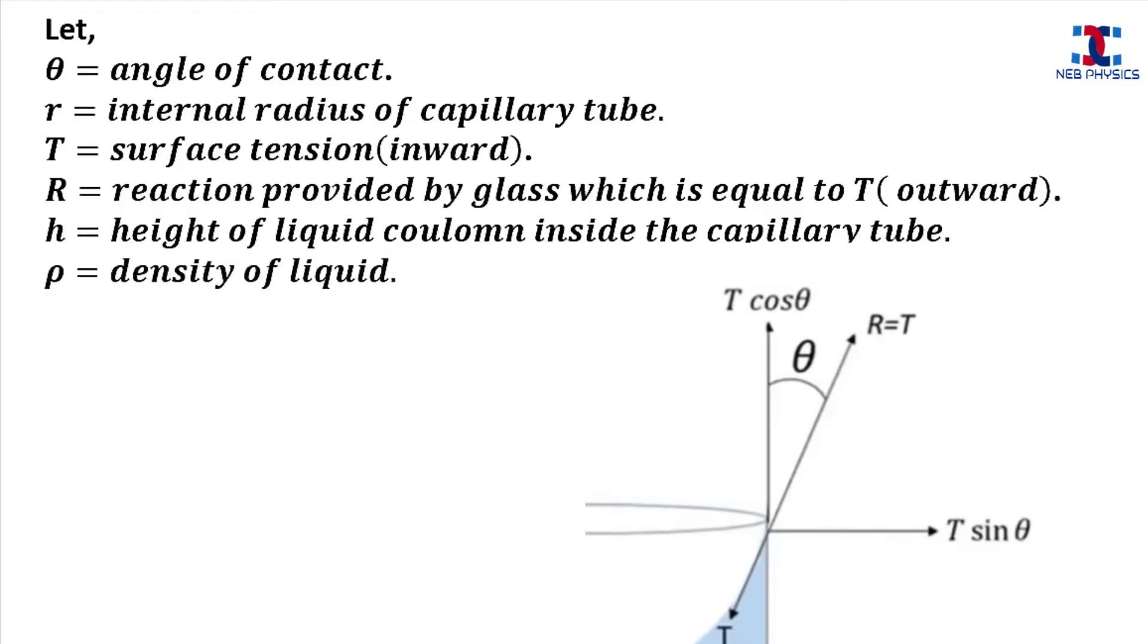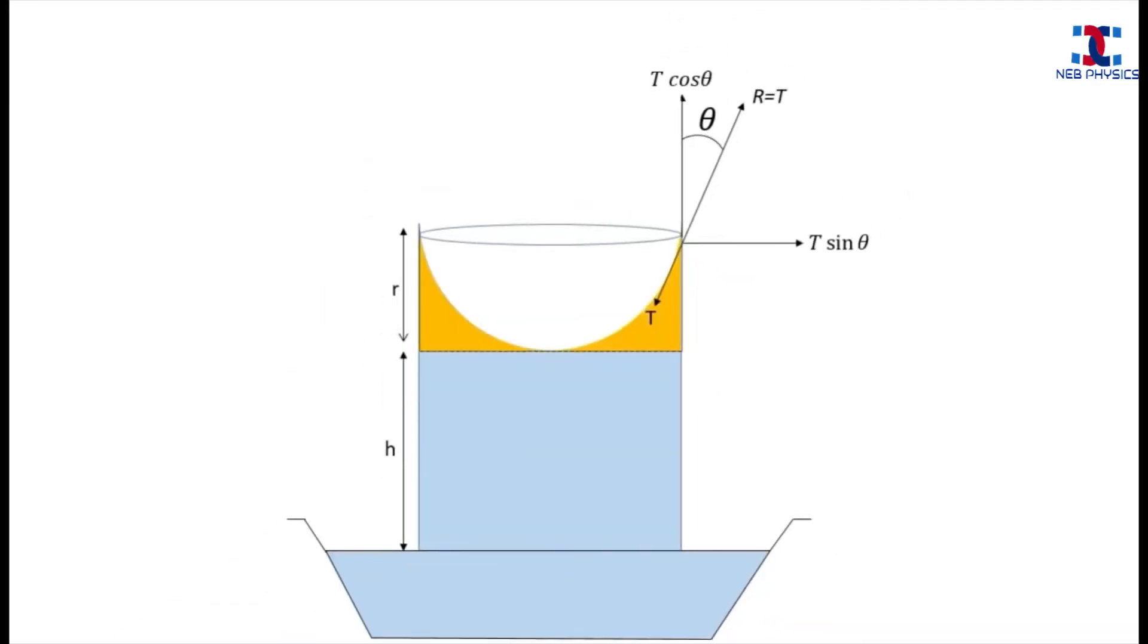Rho is the density of liquid, and g is acceleration due to gravity.